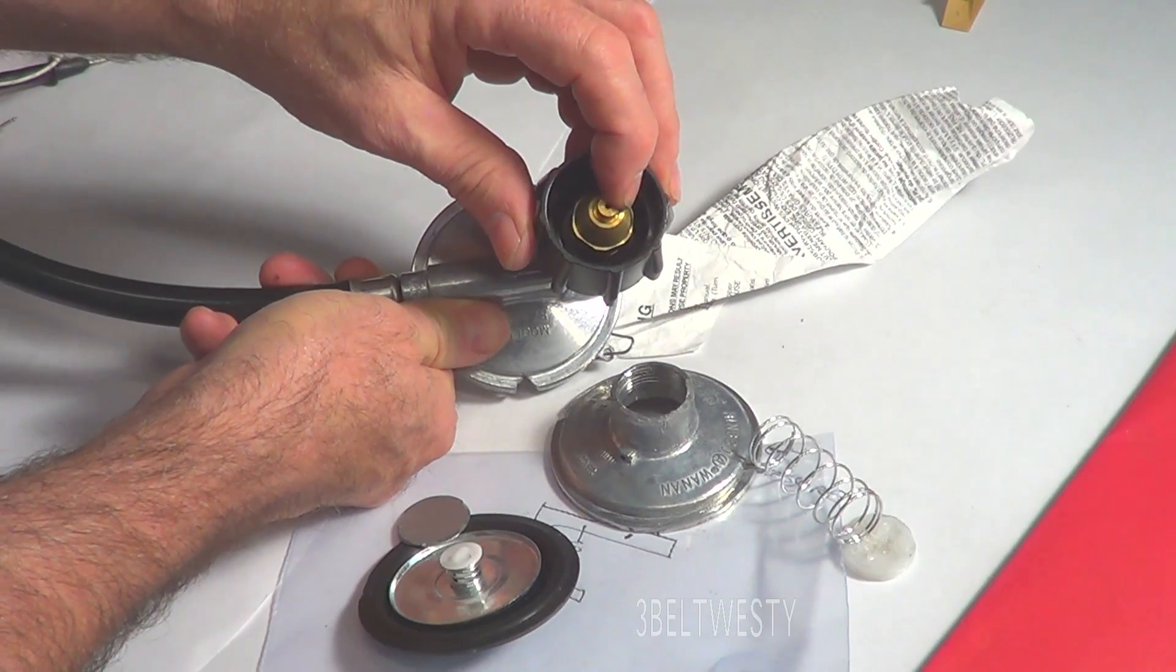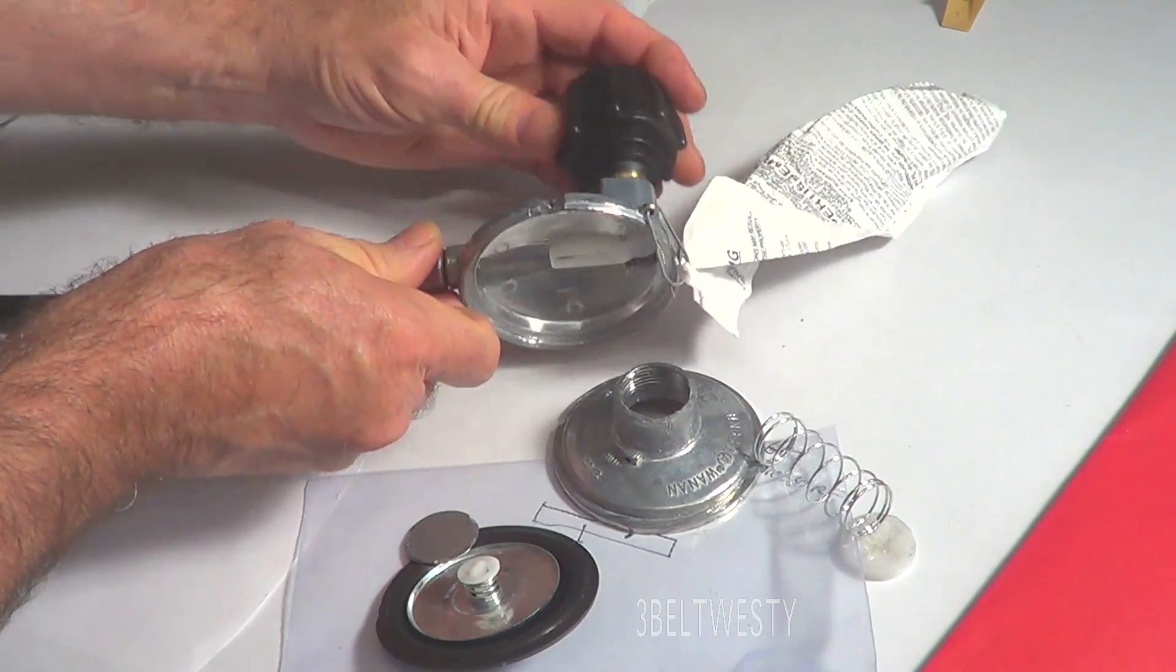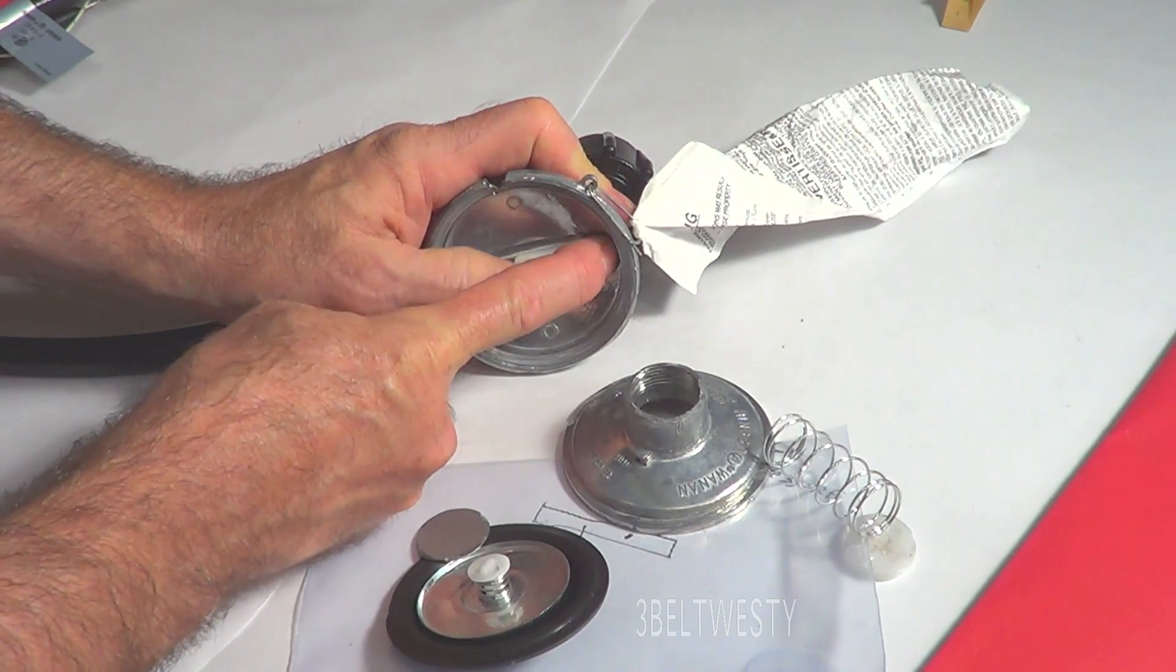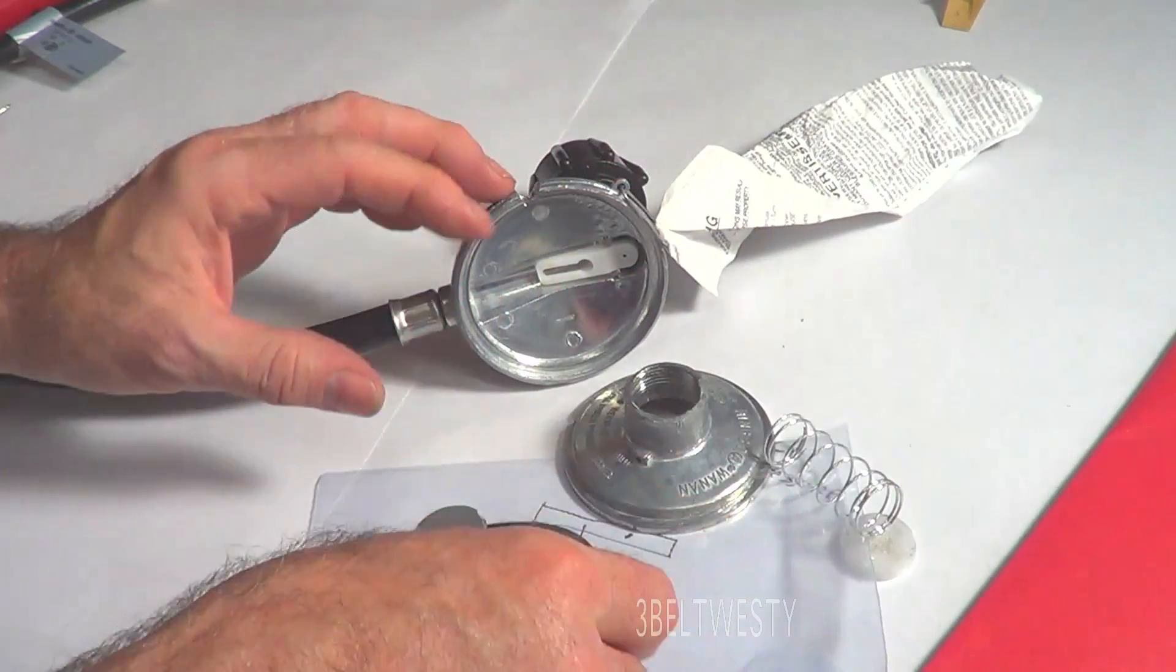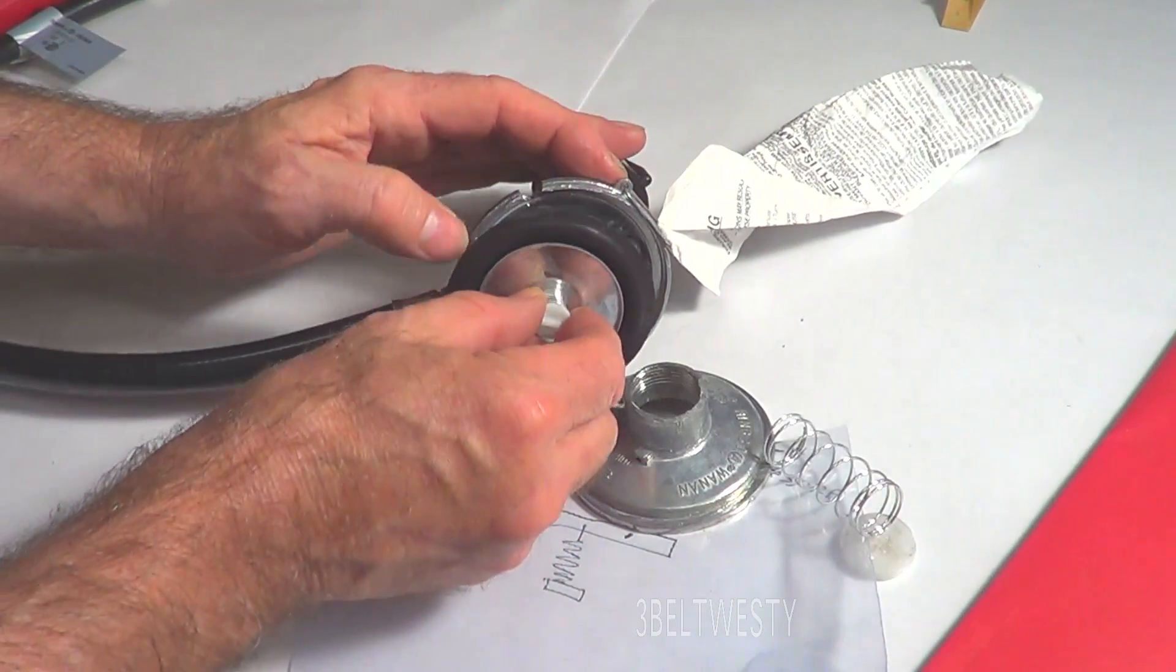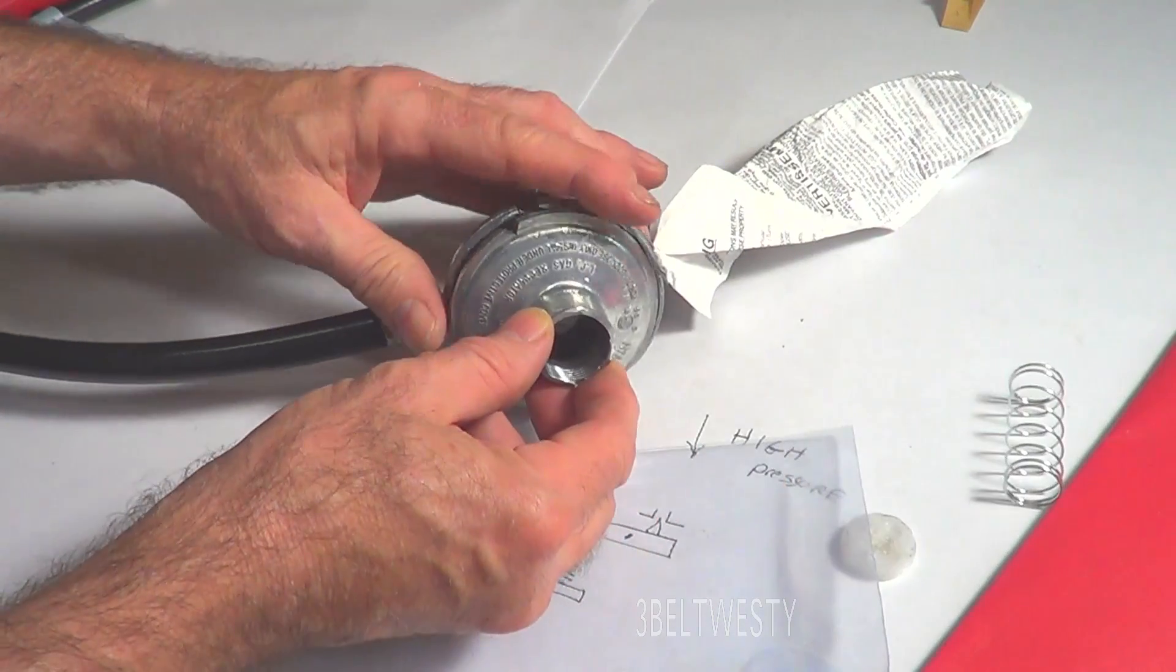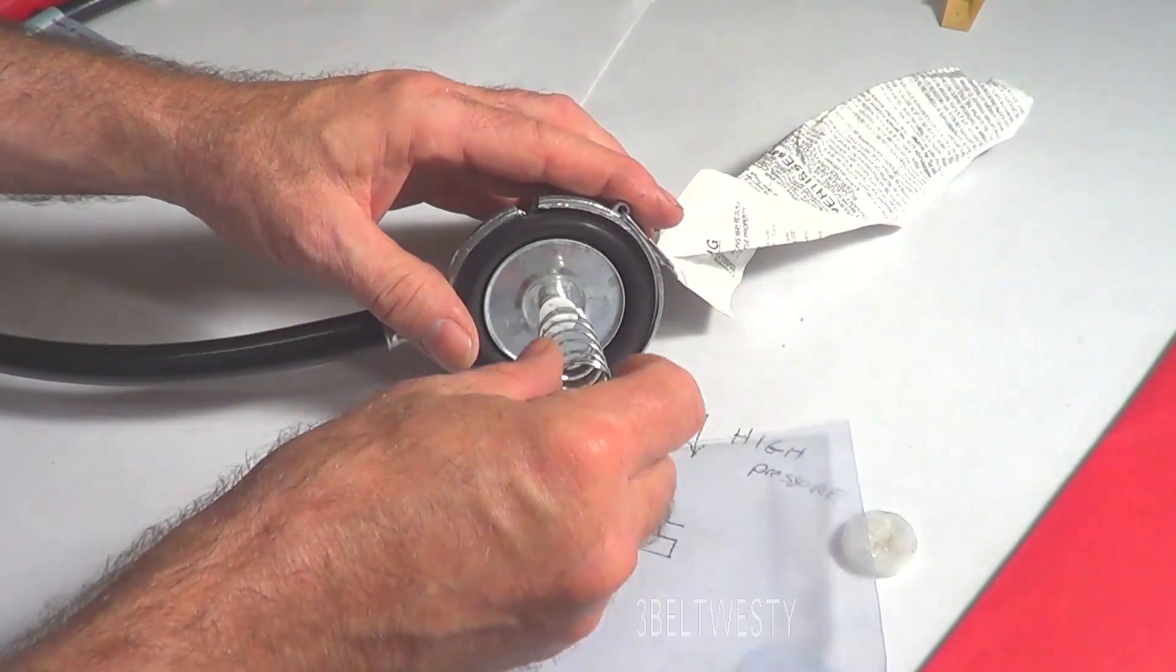This hooks up to the LP cylinder and this is the poplet valve that's in here. There's a spring and the diaphragm inside of here. Here's the body, there's a spring that pushes up against this.